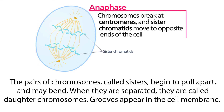Then there's anaphase. The pairs of chromosomes called sisters begin to pull apart and may bend. When they are separated, they are called daughter chromosomes. Grooves begin to appear in the cell membrane.